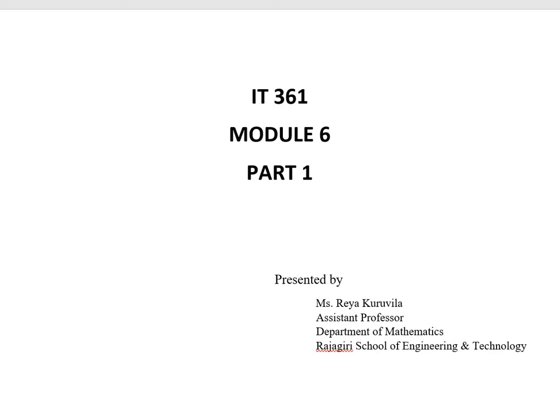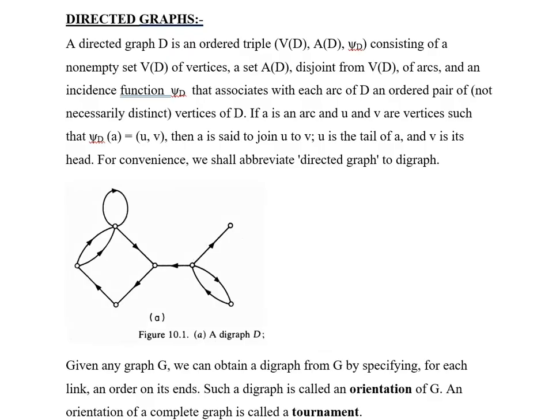IT361 module 6 part 1. In this part we are going to discuss directed graphs. A directed graph D is an ordered triple represented by ordered pair (V(D), A(D), ψ_D), consisting of a non-empty set V(D) of vertices, a set A(D) disjoint from V(D) of arcs, and